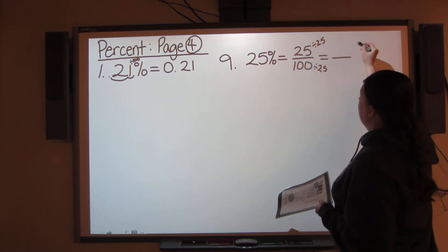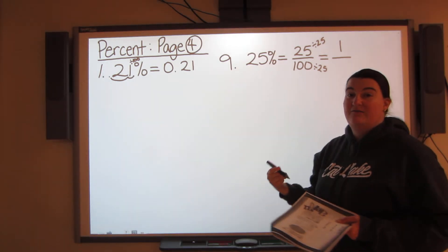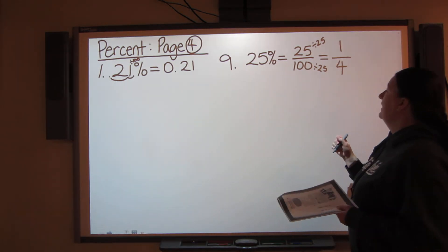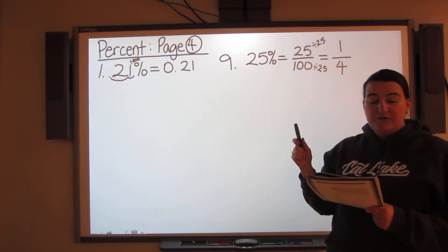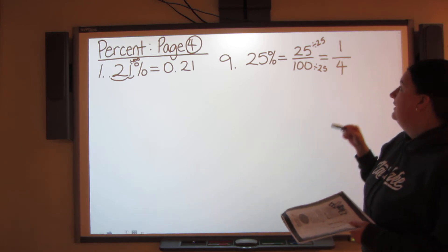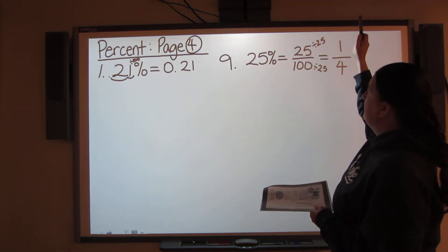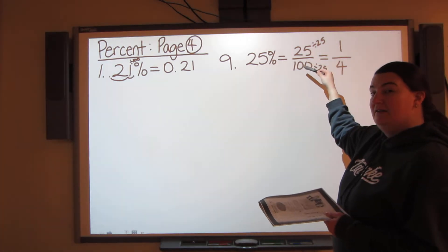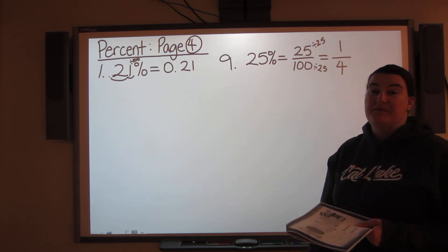25 divided by 25 is 1, and 100 divided by 25 is 4 — and there's your fraction in lowest terms. So for the questions from 9 all the way to 20, you're going to take your percent, stick it as the numerator, your denominator will be 100, and then you'll find lowest terms from that fraction.